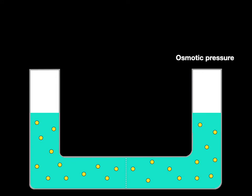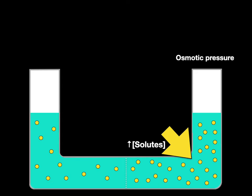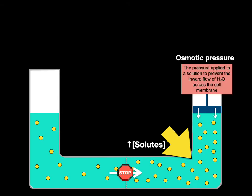Now what's osmotic pressure? Well, to show that, let's increase the solute concentration like we did before. Water is going to want to flow from one side of the membrane to the saltier side, but what we're going to do is apply enough pressure in the tube to stop the movement of water. So the pressure applied to a solution to prevent the inward flow of water across the cell membrane — that's osmotic pressure. It's like osmotic pressure is an anti-osmosis type of thing.